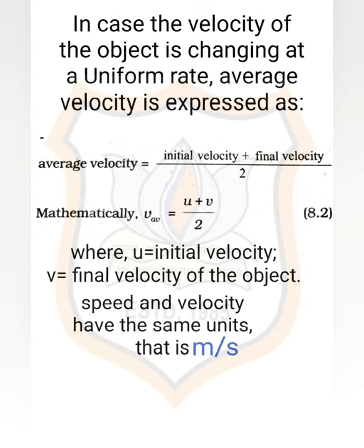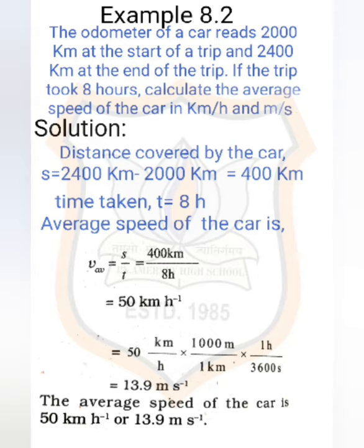In example 8.2: the odometer of a car reads 2000 kilometers at the start of a trip and 2400 kilometers at the end of the trip. If the trip took 8 hours, calculate the average speed of the car in kilometers per hour and meters per second. The distance covered by the car is 2400 minus 2000 kilometers, which equals 400 kilometers. Time taken is 8 hours.